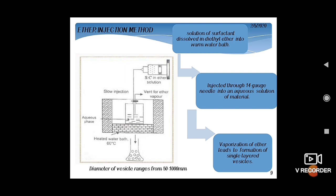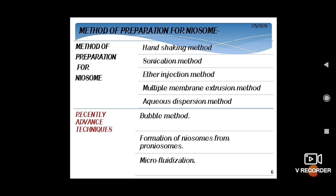In the ether injection method, a lipid solution in diethyl ether is slowly injected into warm aqueous solution of the material to be encapsulated, using a syringe-type infusion pump (14-gauge needle) at 55–65°C under reduced pressure. Vaporization of ether leads to the formation of single-layered vesicles with a diameter ranging from 50 to 1000 nanometers. In the multiple membrane extrusion method, a mixture of surfactant, cholesterol, and dicetyl phosphate in chloroform is evaporated into a thin film, hydrated with aqueous drug solution, and extruded through a polycarbonate membrane to control niosome size.